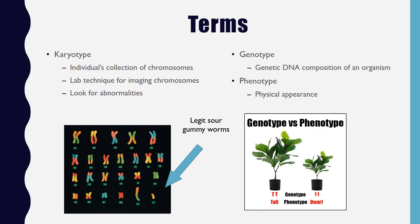Genotype is the genetic DNA composition of an organism, including the heterozygous and homozygous genes inherited from mom and dad. Phenotype, on the other hand, is the physical appearance of an organism. For example, a tall tree has a genotype of TT and a phenotype of tall; a dwarf tree has a genotype of tt and a phenotype of dwarf. A tree with genotype Tt would still have a phenotype of tall because big T codes for tall and is dominant.